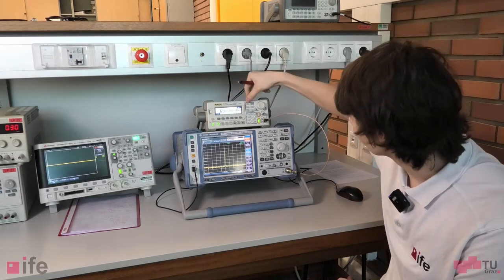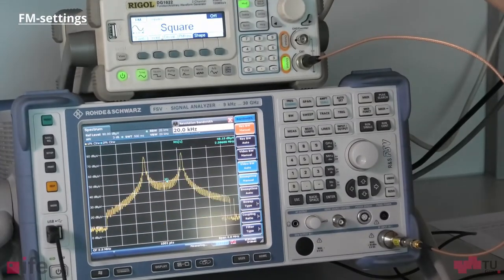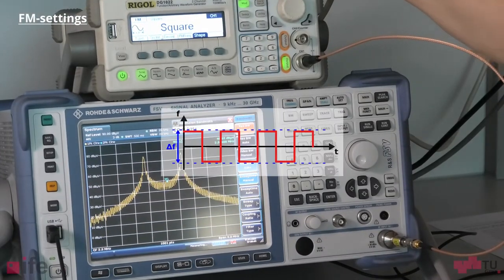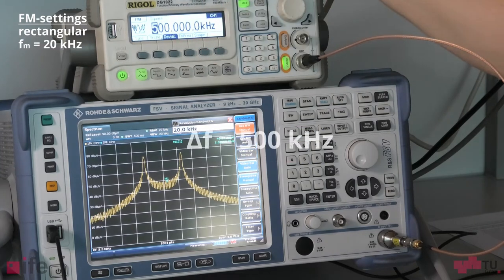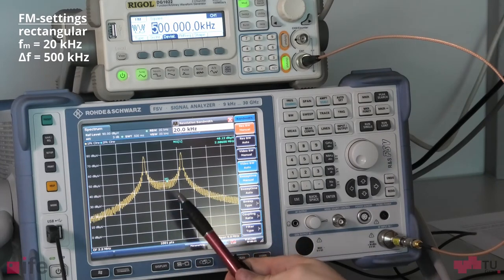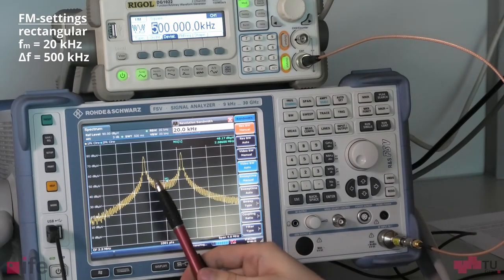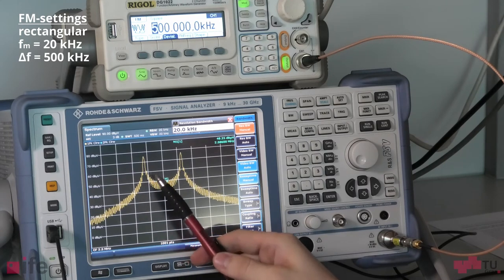Let me just turn on frequency modulation and show you the different waveforms. Now I'm modulating with a square wave with an FM frequency of 20 kilohertz and a deviation of 500 kilohertz, and as we can see, the spectrum is spread. We don't have one peak anymore, but at the ends of the spectrum we can see those huge peaks extending out.